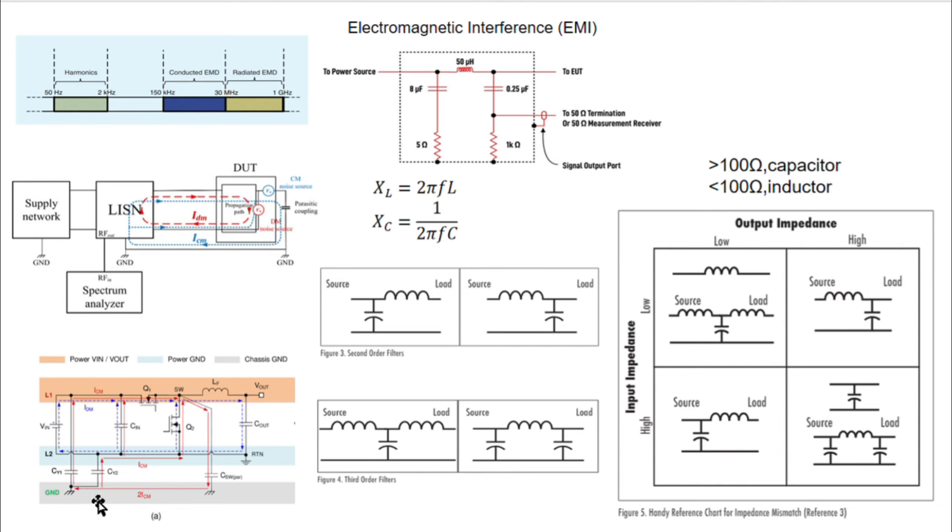If we don't put the LISEN here, DM CM noises flow back to the power supply. LISEN is here to trap the EMI, so that we can measure it precisely, without influencing the main power supply.